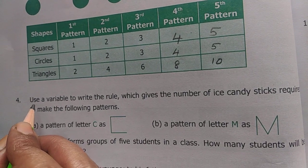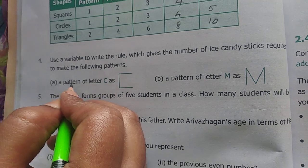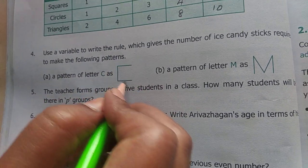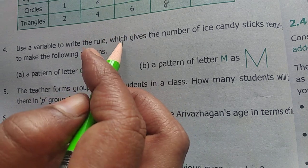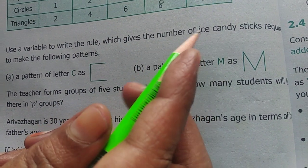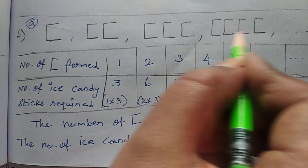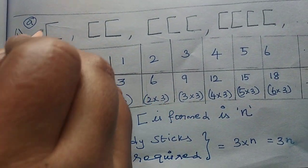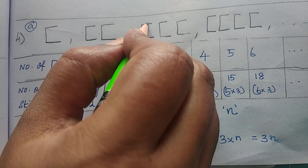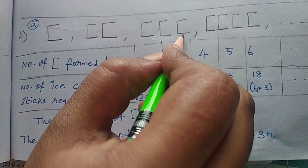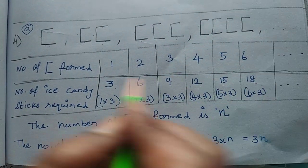Next, come to fourth. Use variable to write the rule which gives the number of ice candy sticks required to make the following patterns. First pattern of letter C. C inger one stick, draw upon. First C inger, understand the number of ice sticks. So we will draw upon pattern. First, second pattern 2 times, 3 times, 4 times, 5, 6 times. So first 1, 2 sticks. Then 1, 2, 3, 4, 5, 6. Then 1, 2, 3, 4, 5, 6, 7, 8, 9. Next 1, 2, 3, 4, 5, 6, 7, 8, 9, 10, 11, 12.